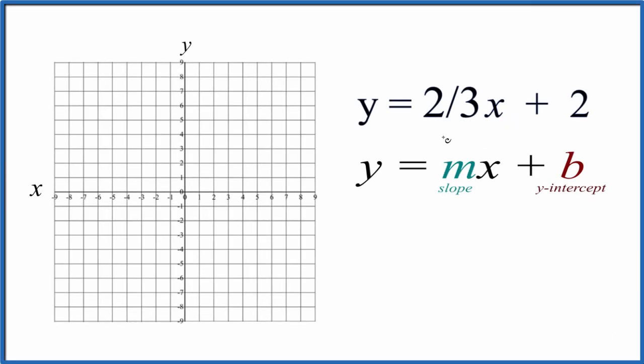Let's graph the linear equation y equals two-thirds x plus two. We're going to use slope-intercept formula to do this.